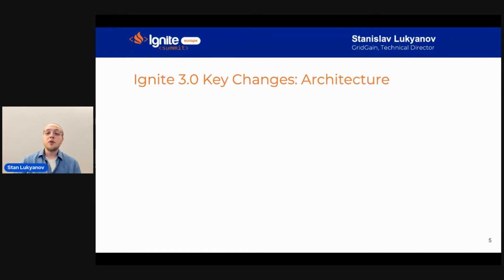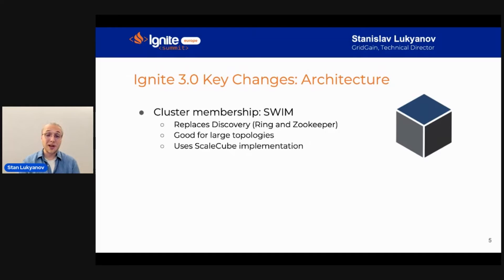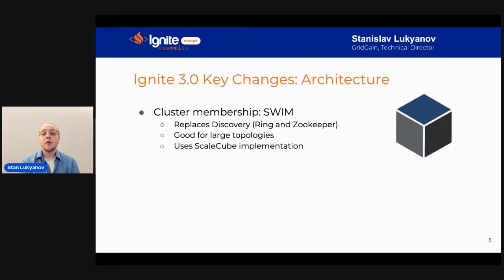The first thing you do with a cluster is getting the nodes together to form a cluster. In Ignite 2, this is done with the discovery protocol. In Ignite 3, this protocol is replaced with a protocol called Swim, implemented with a library called ScaleQ. It is a cluster membership protocol that allows combining nodes into large topologies. In Ignite 2, we had to use ZooKeeper as a helper to build large clusters with hundreds of nodes, but in Ignite 3 this will be possible just with Ignite out of the box.